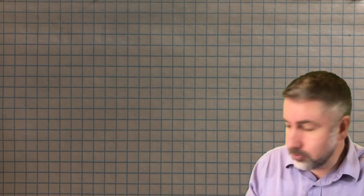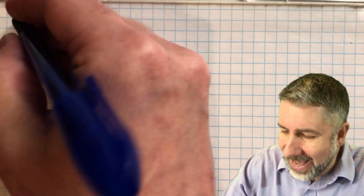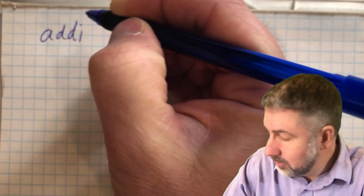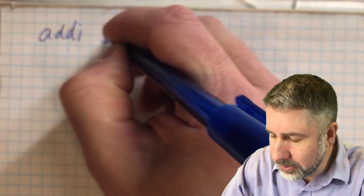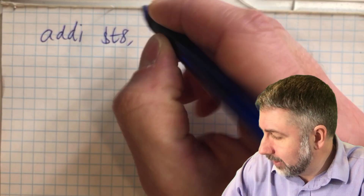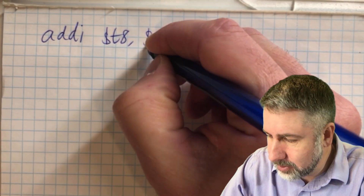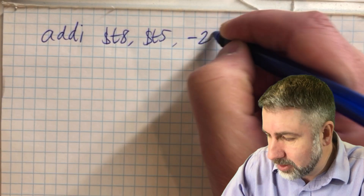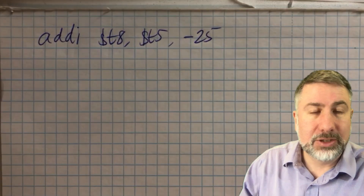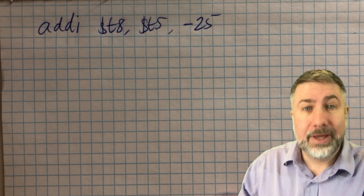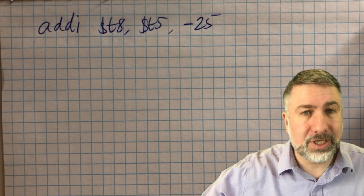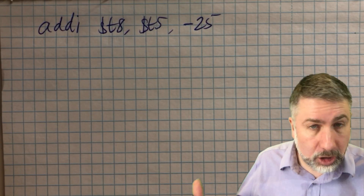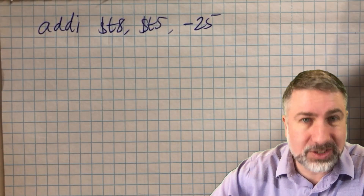The first instruction is add immediate into register T8, the value that's in register T5 and the value negative 25. This is the instruction we want to encode and we're going to walk through the process step by step. First thing: what's the opcode? That's always going to be the first step.